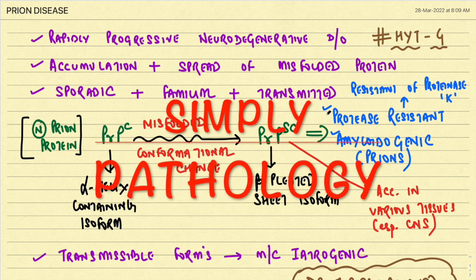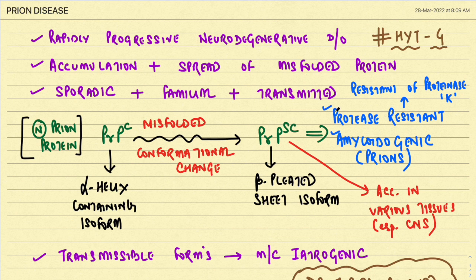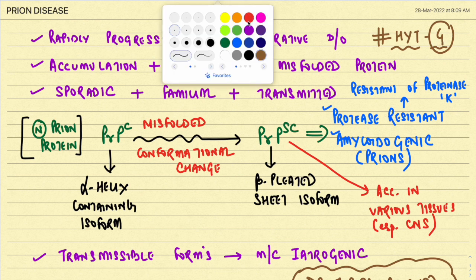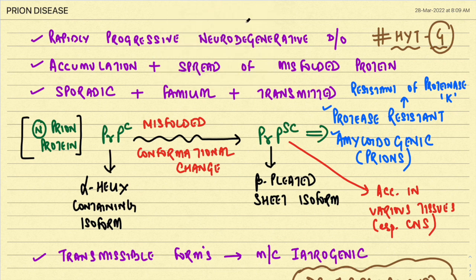Welcome back everyone. I'm Dr. Gibran, and today we are going to read about prion's disease, which is the fourth important high-yield topic. Prion's disease is a rapidly progressive neurodegenerative disorder characterized by not only the accumulation but also the spread of misfolded proteins.